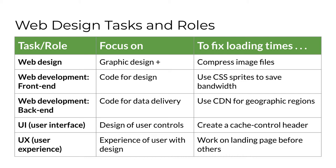On the other hand, a front-end web developer with coding expertise might suggest using CSS sprites, where a single file holds multiple images to save bandwidth. As another example, a back-end web developer with a different kind of coding expertise might suggest a different web host with a better content delivery network that minimizes the physical distance between users and the server that's responding when they try to access the site.